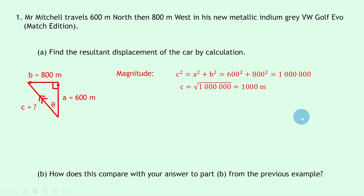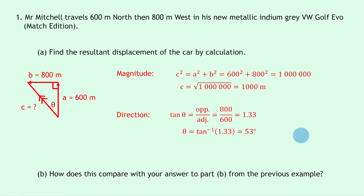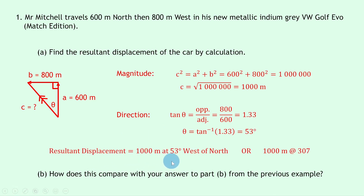For the direction, we use tan θ = opposite/adjacent = 800/600 = 4/3 = 1.33. Taking inverse tan of 1.33 gives θ = 53 degrees. The resultant displacement is therefore 1000 meters at 53 degrees west of north. As a bearing, we go clockwise from north to the resultant vector, which is 360 minus 53, giving a bearing of 307.